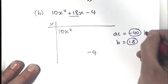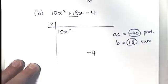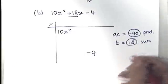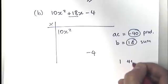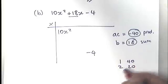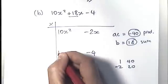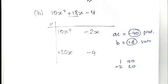Remember, this is the product, and this is the sum of our two numbers. So we start searching for things that multiply to make 40. 1 and 40, 2 and 20. Ah, I can make 18 from 2 and 20, especially if I have a minus 2 and a positive 20. So I've got a negative 2 and a positive 20.